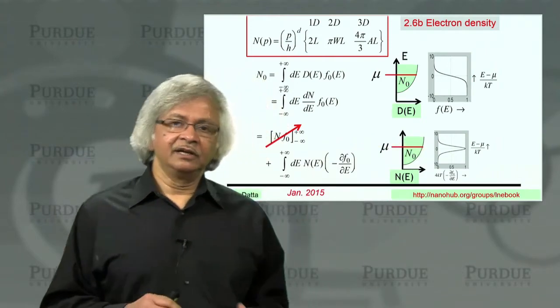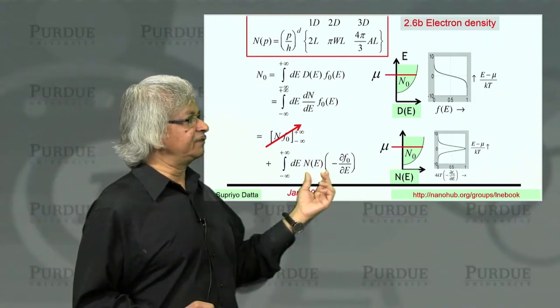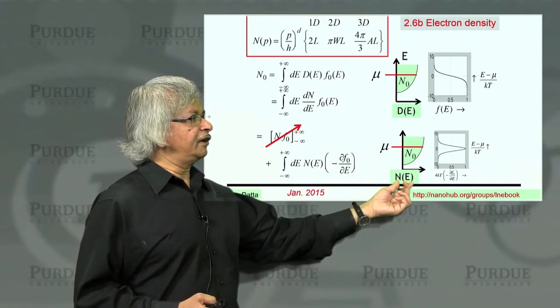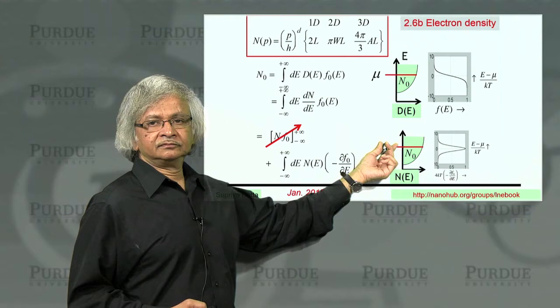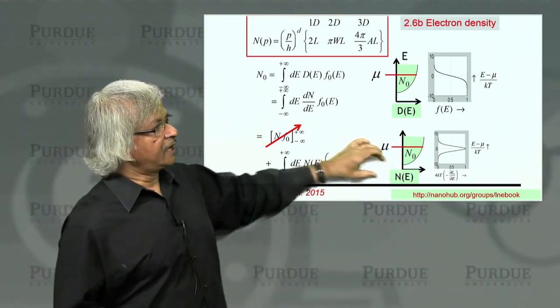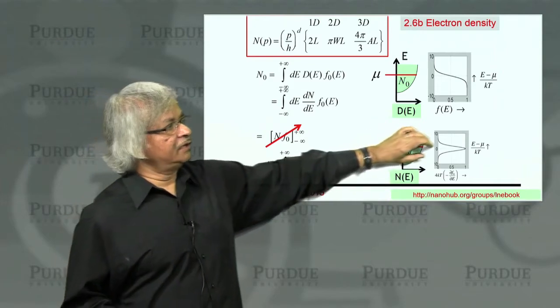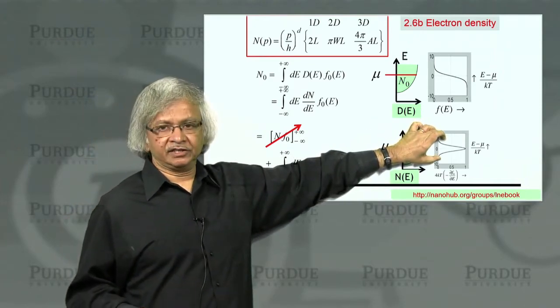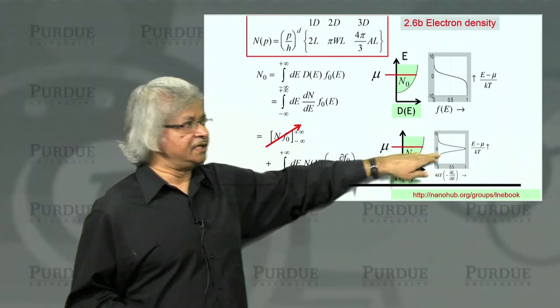Whereas if you are at non-zero temperatures, what you need to do is average this N of E over a certain range of energies determined by this dF dE.